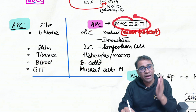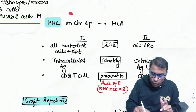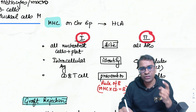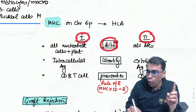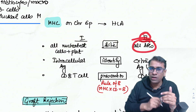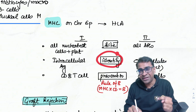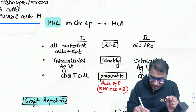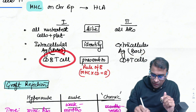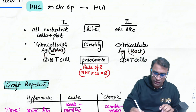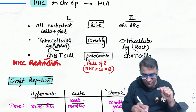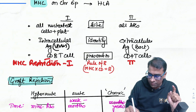MHC is a gene on chromosome 6 that codes for a protein called HLA. MHC-1 is on all nucleated cells and platelets; MHC-2 is on all APCs. MHC-1 identifies intracellular antigens like viruses and presents to CD8 cells. MHC-2 identifies bacteria and presents to CD4 cells. This is called MHC restriction.